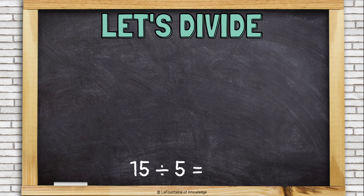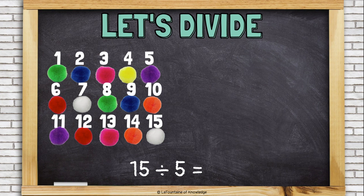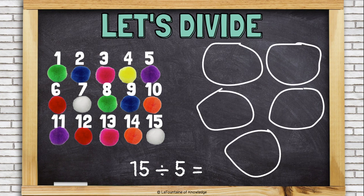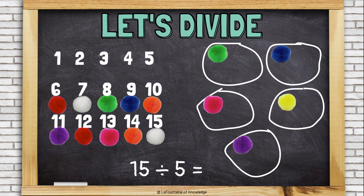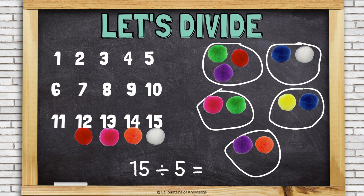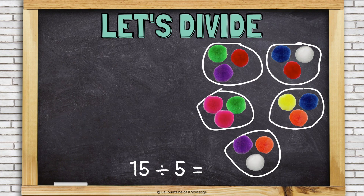Now let's try dividing using the pom-poms. We're going to do 15 divided by 5. So this time, I'm starting with 15 pom-poms — I'm starting with the big number — and I'm going to divide them up into 5 even groups. To keep them even, I think about it like dealing cards, putting 1 pom-pom in each group and going around until I'm out of pom-poms. Now I can see that each group has 3 pom-poms. That is the answer to our division problem: 15 divided by 5 equals 3.